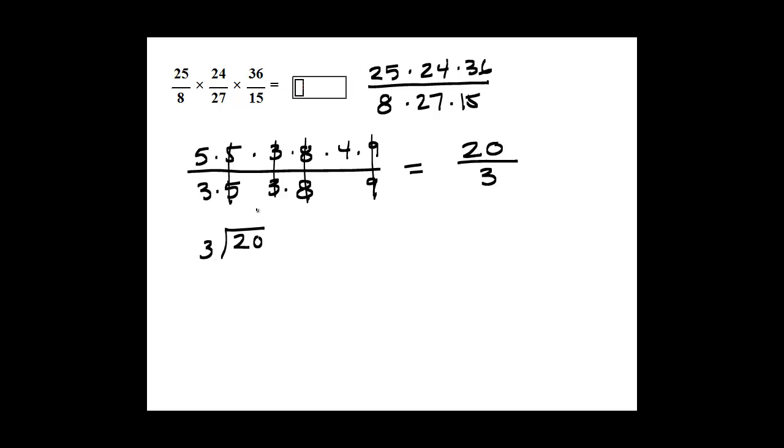3 goes into 20 6 times. 6 times 3 is 18, remainder 2. And so we have 6 and 2 thirds as a mixed number.